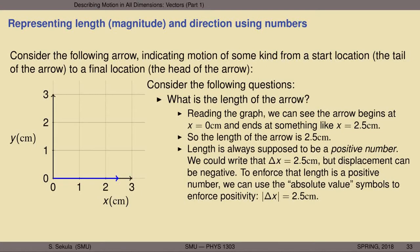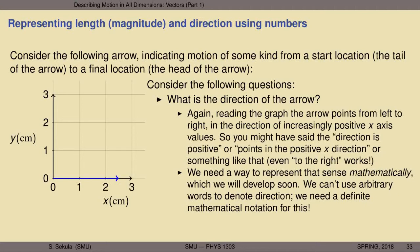What is the direction of the arrow? Reading the graph, the arrow points from left to right — from where it starts to where it ends — in the direction of increasingly positive x-axis values. So you might say the direction is positive, or the arrow points in the positive x direction. But you see the problem: there are many perfectly valid but individually subjective ways of indicating directionality. We have not yet defined a firm mathematical basis that we can use to consistently communicate direction from one person to another, independent of the vagaries of language. We need a way to represent that sense mathematically.